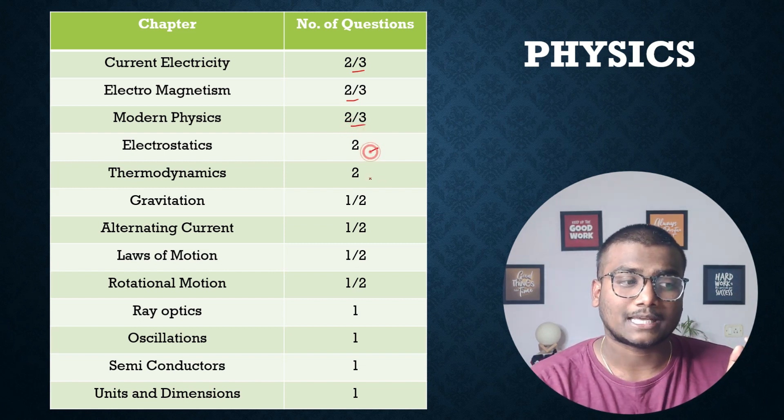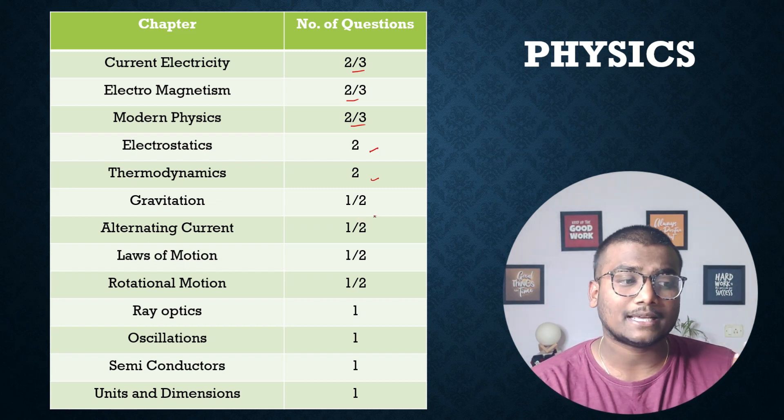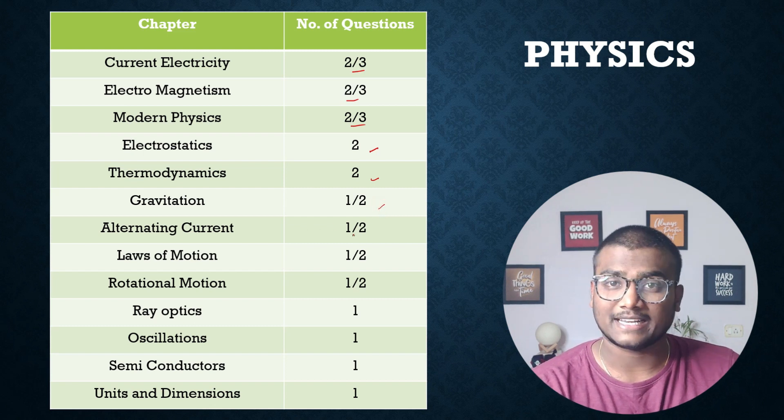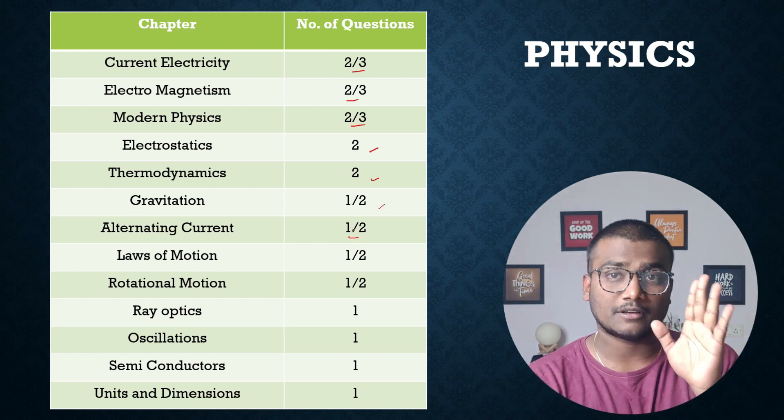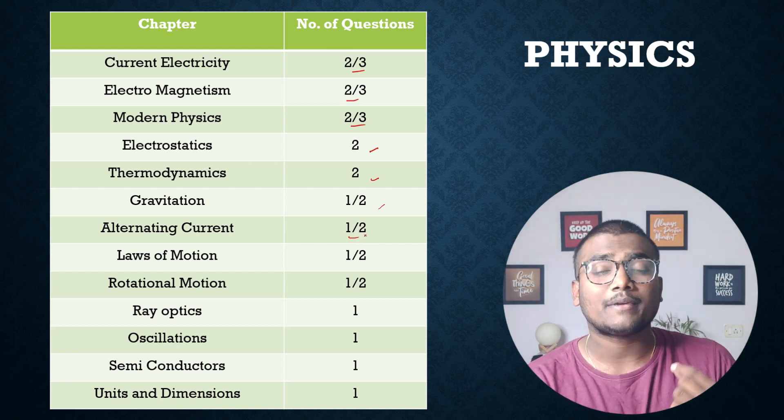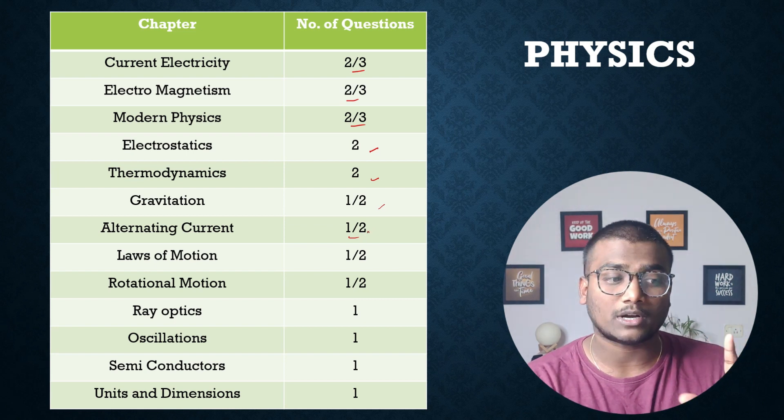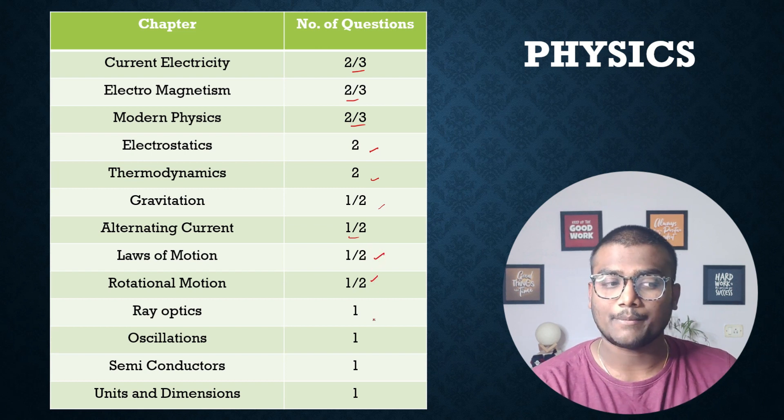Electrostatics: two questions. Thermodynamics: two questions. Gravitation: one question pakka, though there's a chance you could get two. Alternating Current: this is a simple topic, one or two questions. Rotational Motion: one or two. Laws of Motion: one or two.